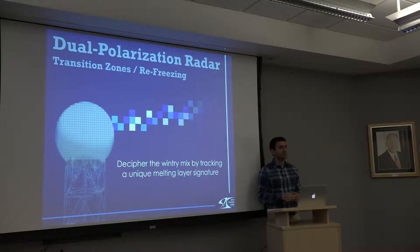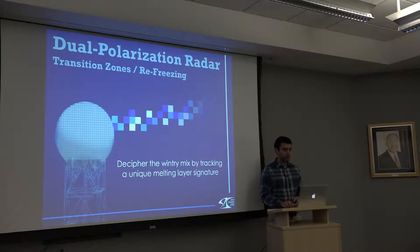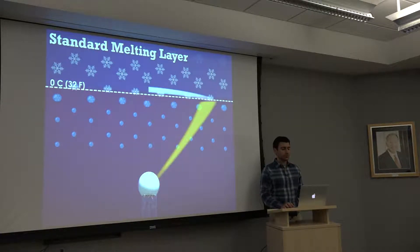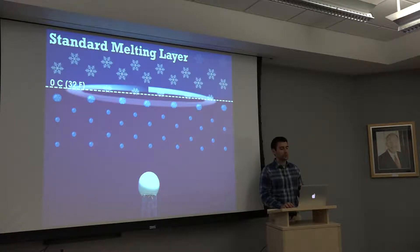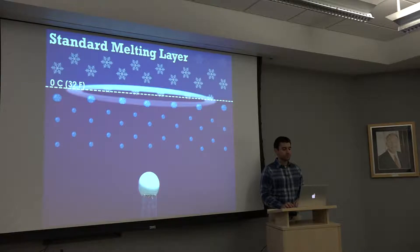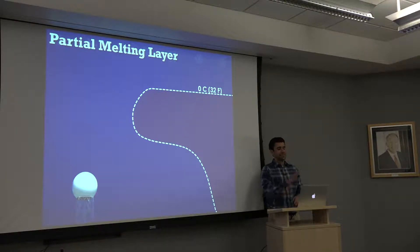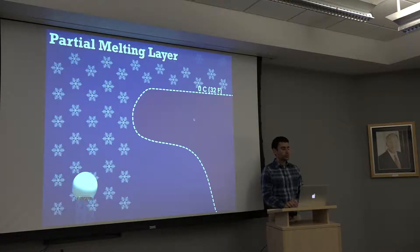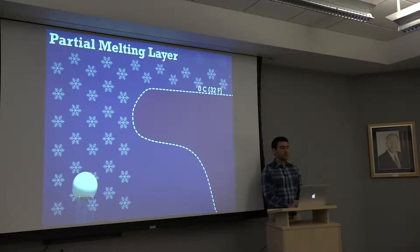We can decipher a wintry mix by tracking a unique melting layer signature. Going back to our previous melting layer example, we get that nice ring structure in reflectivity, correlation coefficient, and ZDR. But what if we don't have a uniform thermal profile — what if we have a warm nose aloft pushing in from the south? We have snow over the radar site because everything's below freezing, and also snow aloft over our warm nose.